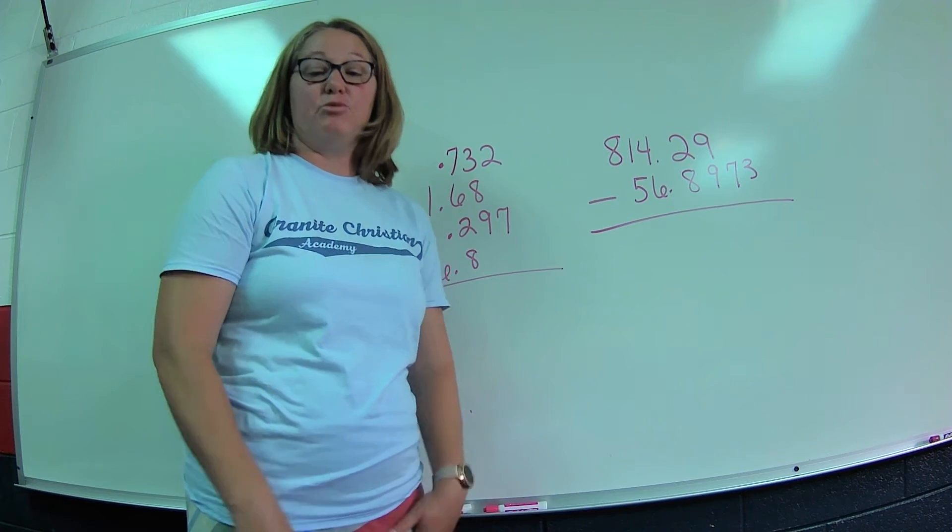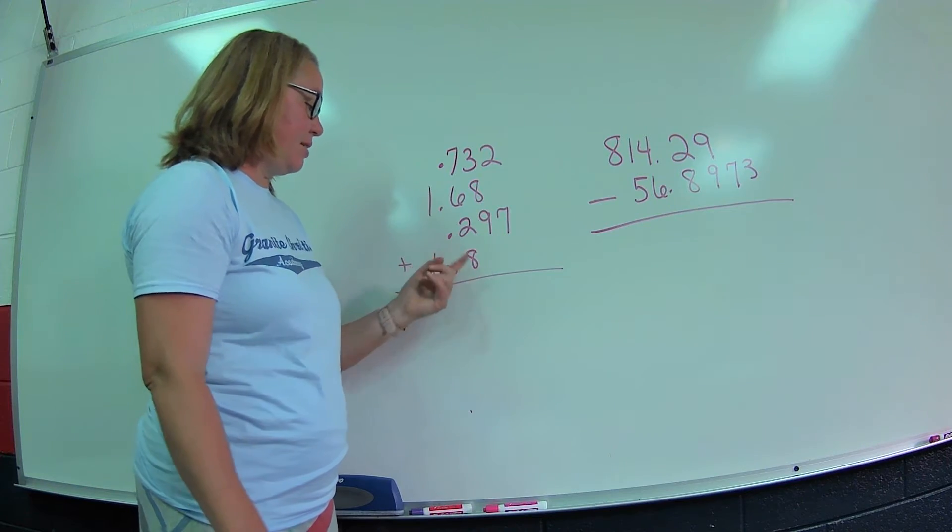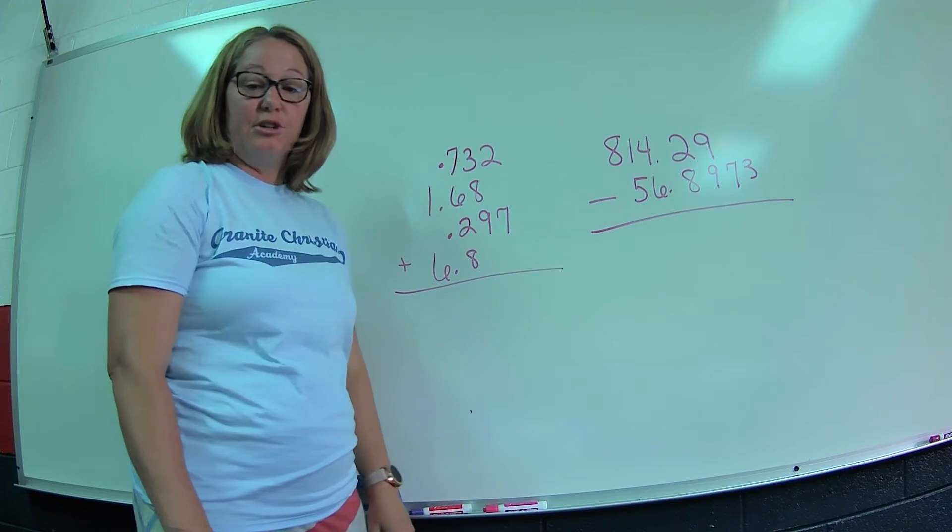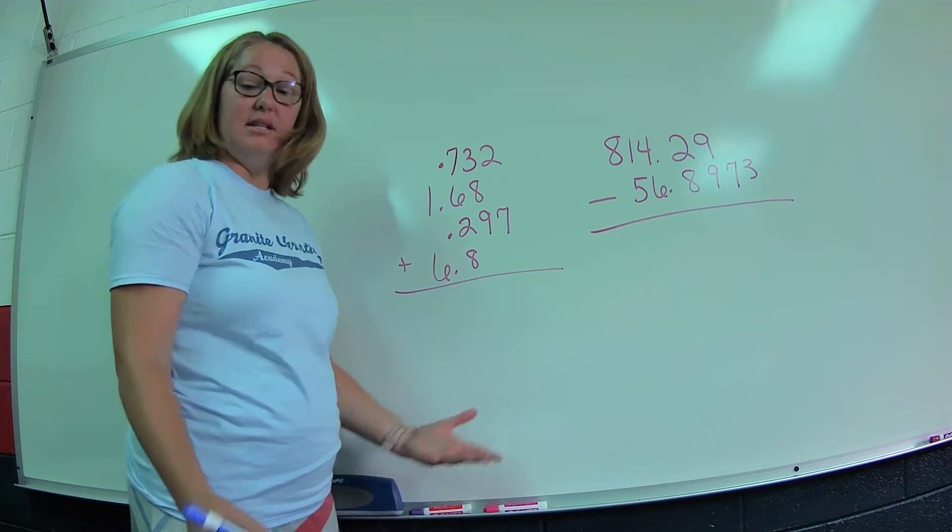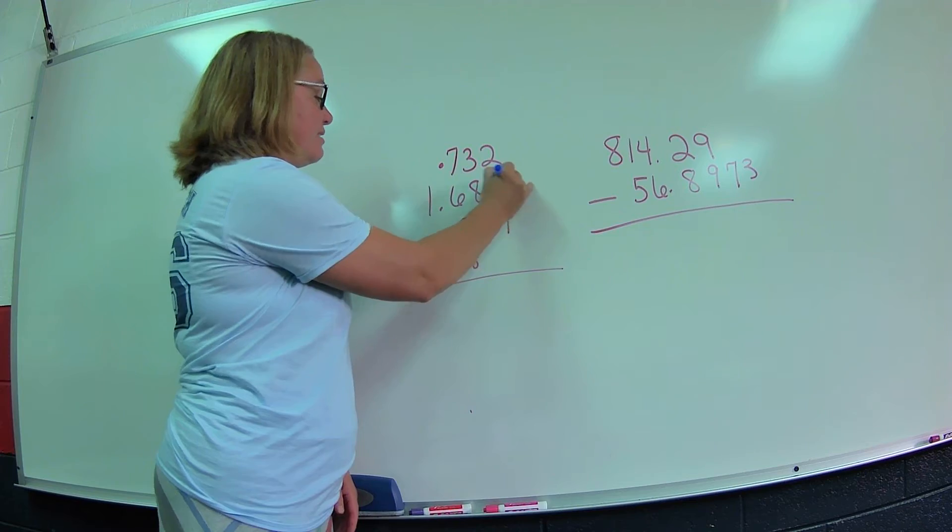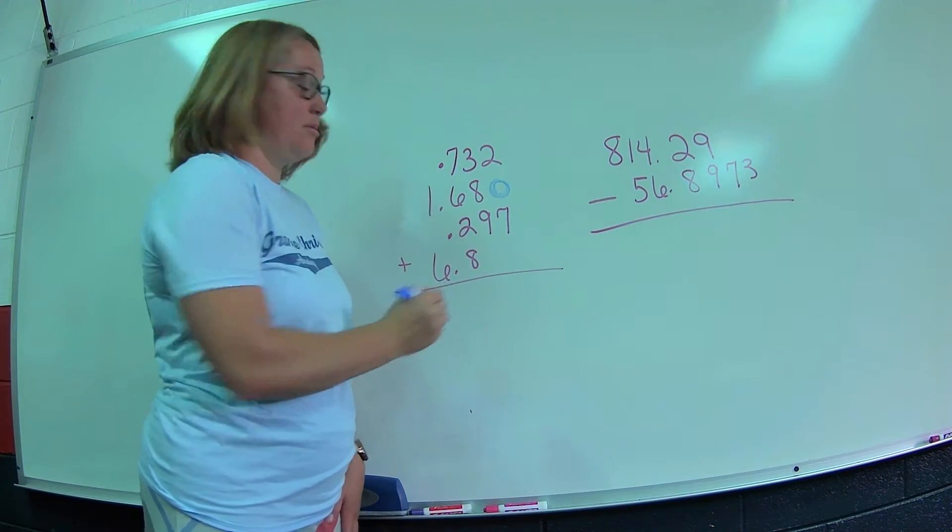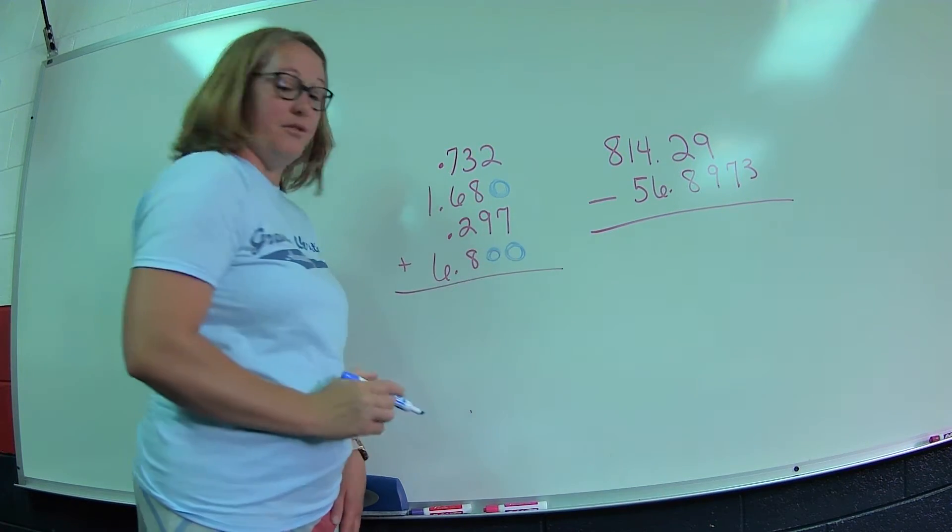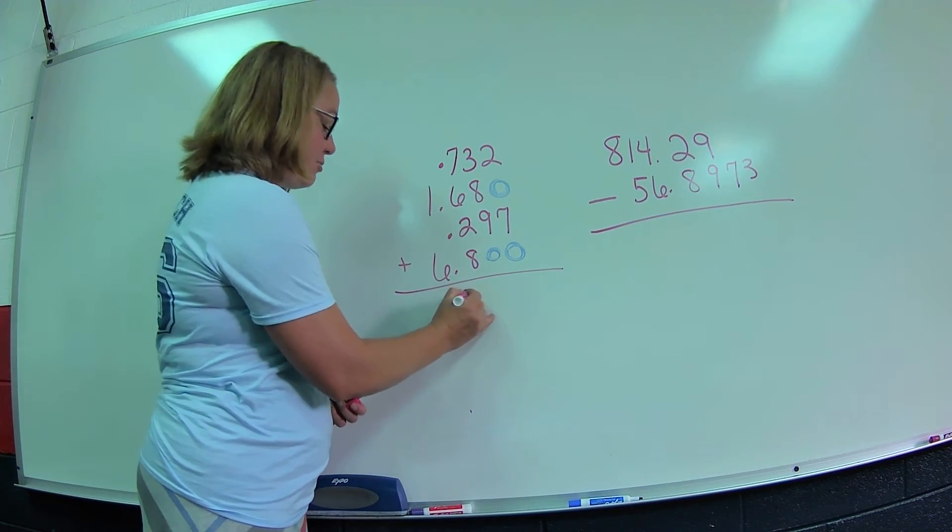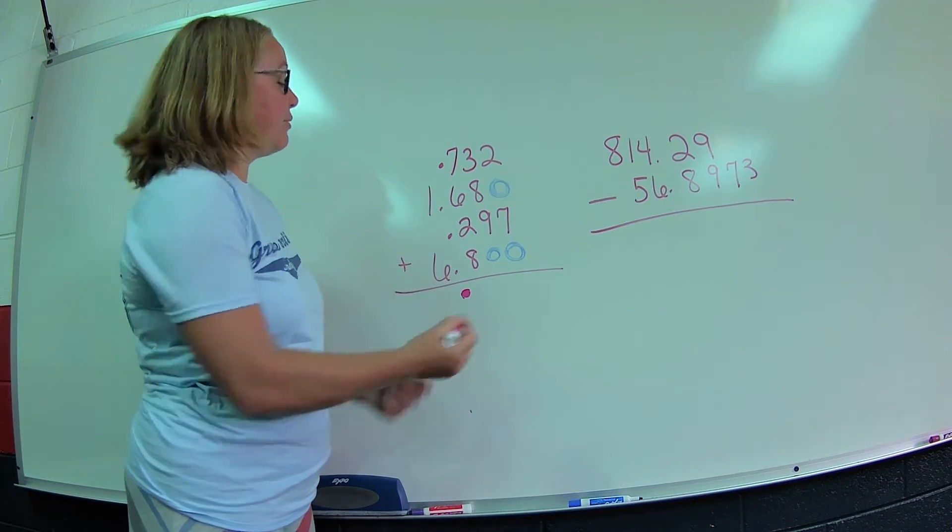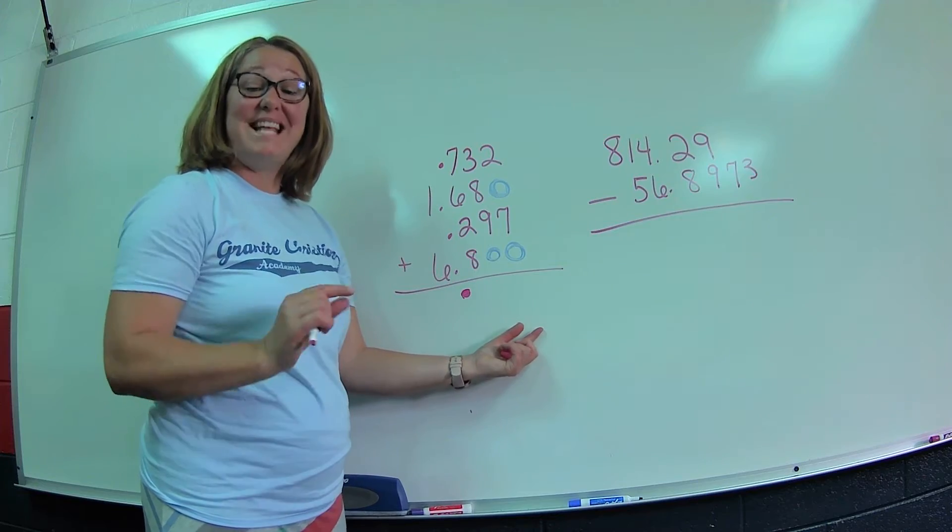Last, we left off at adding and subtracting of decimals. I wrote a few problems here: 0.732, 1.68. Notice my decimals are all lined up. When we add and subtract decimals, we want to make sure we have the same number of digits past the decimal. I need to add a zero here. Remember, adding and taking away a zero doesn't change the value.